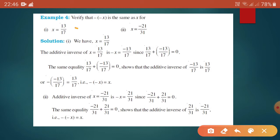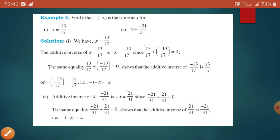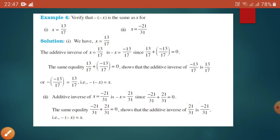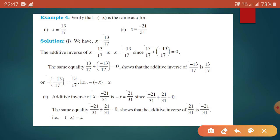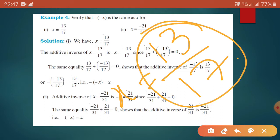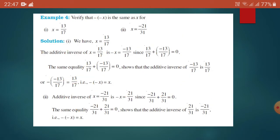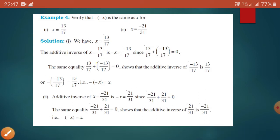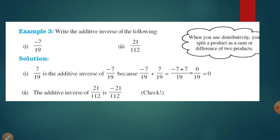We are taking the first question: x is equal to 13 by 17. Now how to prove it? First we are taking the additive inverse of this number. We know how to find the additive inverse of any number. The number x is equal to 13 by 17, so the additive inverse of x will be minus 13 by 17.